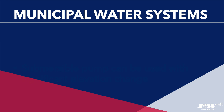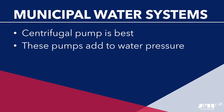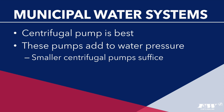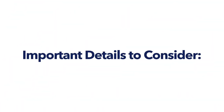If your irrigation system is connected to a municipal water system, the best pump is a centrifugal booster pump. Because the incoming water is already pressurized, these pumps only add to the existing pressure, so a smaller pump is sufficient. Most manufacturers carry a line of booster pumps for this purpose. Importantly, a booster pump cannot change the amount of flow available — that is determined by the size of the water meter. A booster pump can only boost the pressure of the system.